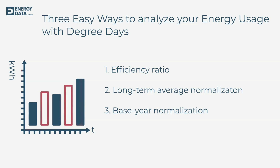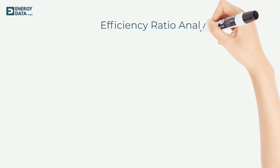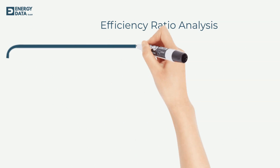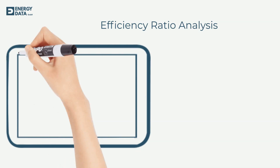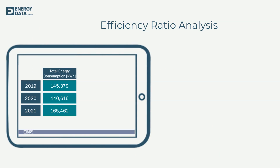Let's start with the efficiency ratio approach. The efficiency ratio is a simple way to understand weather-corrected energy performance. In this simplified example we have the energy usage for heating on an annual basis for three years.